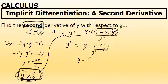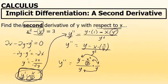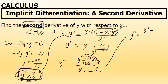After substituting, x times x over y gives x squared over y, so the second derivative becomes y minus x squared over y, all over y squared. This is a complex fraction, so I'll eliminate the inner denominator by multiplying numerator and denominator by y. Distributing y through the numerator gives y squared minus x squared, and the denominator becomes y cubed.